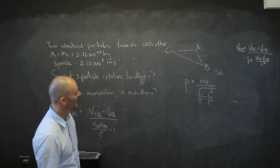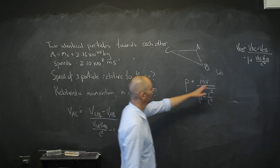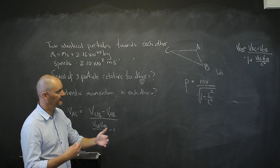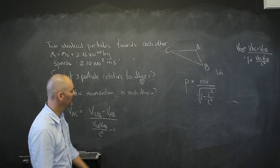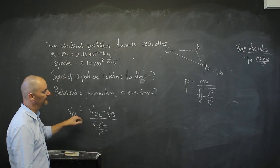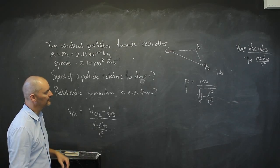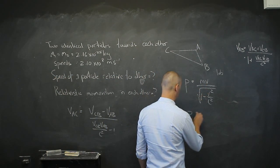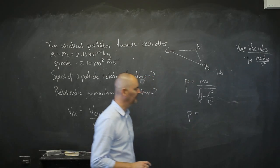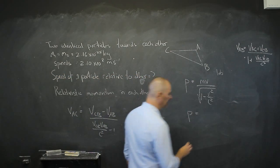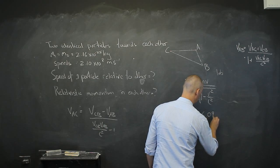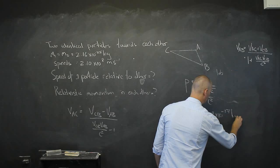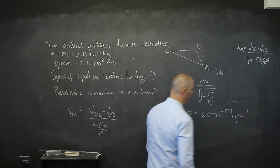Because according to one particle, it sees itself as standing still and the other rushing towards it — or vice versa. This VAC is their velocity towards each other. Plugging VAC back into the relativistic momentum formula, I get a momentum of approximately 6.09 × 10⁻¹⁷ kilogram meters per second.